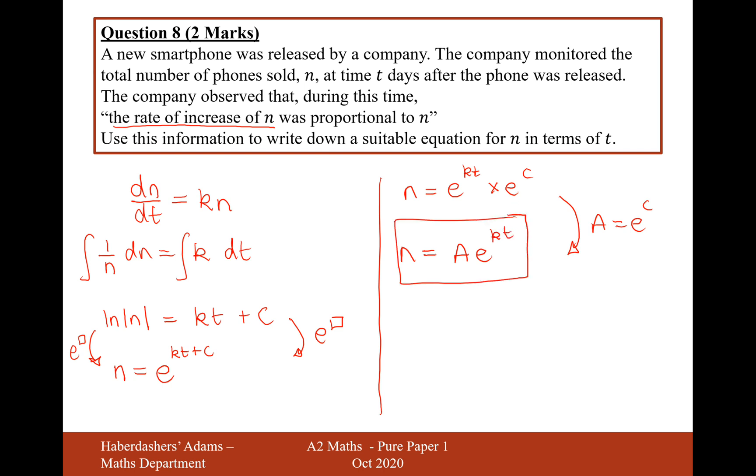And there we are. That's the answer for this question here. It's an exponential equation. If you see that the rate of increase is proportional to the number of phones you've sold, then it's an exponential equation. So there we are. That's the answer for question eight there. Let's now move on to question nine.